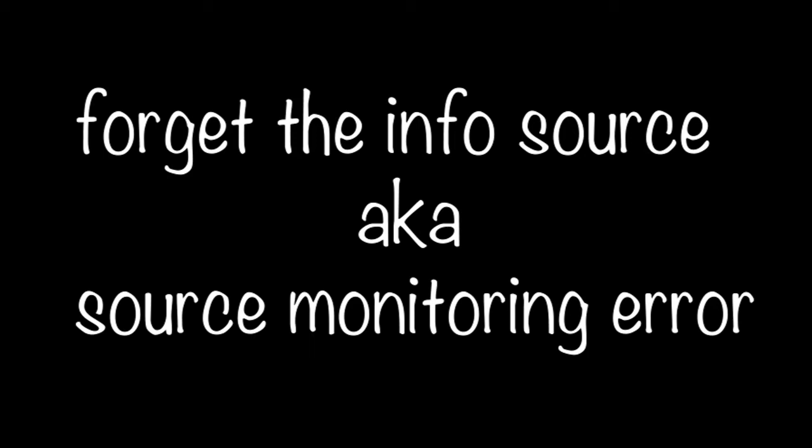When people recall information, they often forget the information source. This is called an error in source monitoring. For example, you're angry with someone but forgot that it happened in a dream, or you recognize someone but don't know from where.